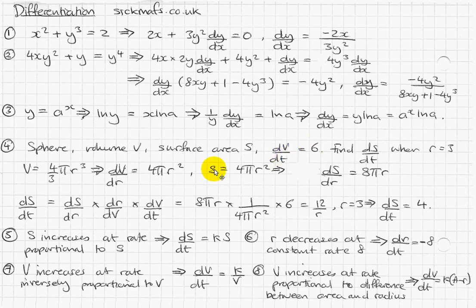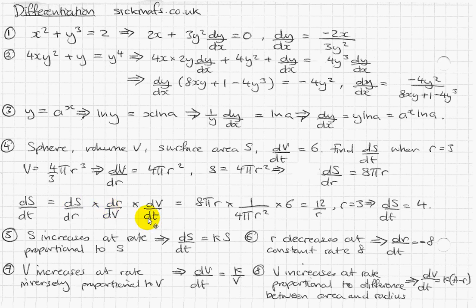We need to cancel those out. If we include dr/dV in between, it cancels the dr and the dV, leaving us with dS/dt overall. We have dV/dr = 4πr², but not dr/dV directly. Since we treat these as fractions, dr/dV is just the reciprocal: 1/(4πr²). So we're looking for what starts the right way, ends the right way, with the middle terms cancelling out.